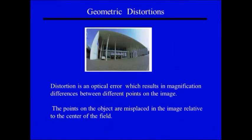Geometrical disorders. Distortion is an optical error which results in magnification differences between different points of image. The points of an object are mis-displaced in the image relative to the center of field.